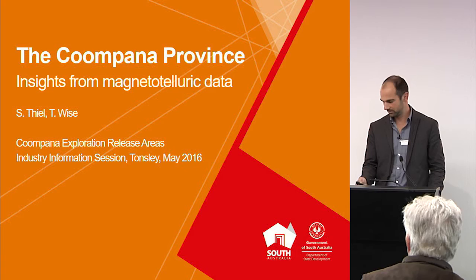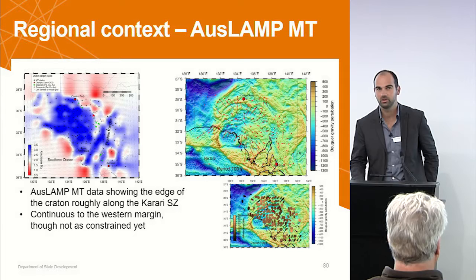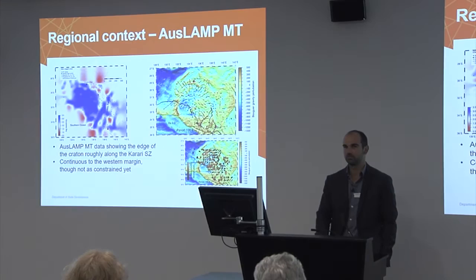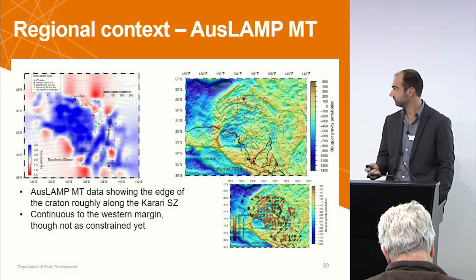I'm going to talk about the MT data that we have further out in the west and what that shows. Just to put it into context, what I'm showing here is actually the Gawler Craton, the area that we do know a lot about. The image to focus on is a resistivity depth slice at 20 kilometers derived from the Auslamp MT data.